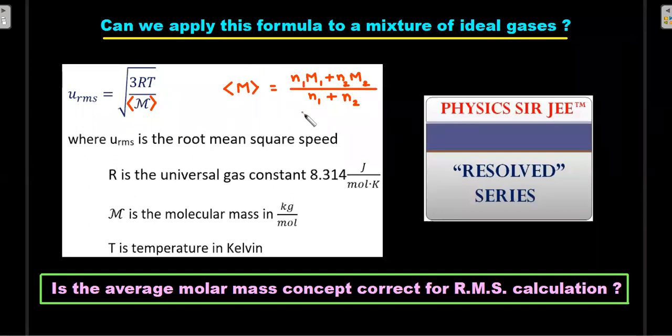This is the idea that we are going to explore in today's video: Can we apply this formula to a mixture of ideal gases where average molecular weight is given by a weighted average or weighted arithmetic mean, where n1 and n2 are the number of moles of gas 1 and gas 2 respectively? Is the average molar mass concept correct for the RMS calculation or not is what we are going to resolve.